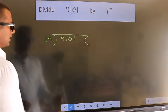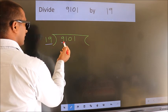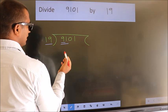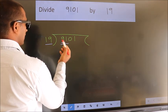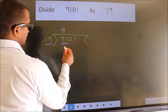Next. Here we have 9. Here 19. 9 smaller than 19. So, we should take two numbers, 91. A number close to 91 in 19 table is 19 fours, 76.